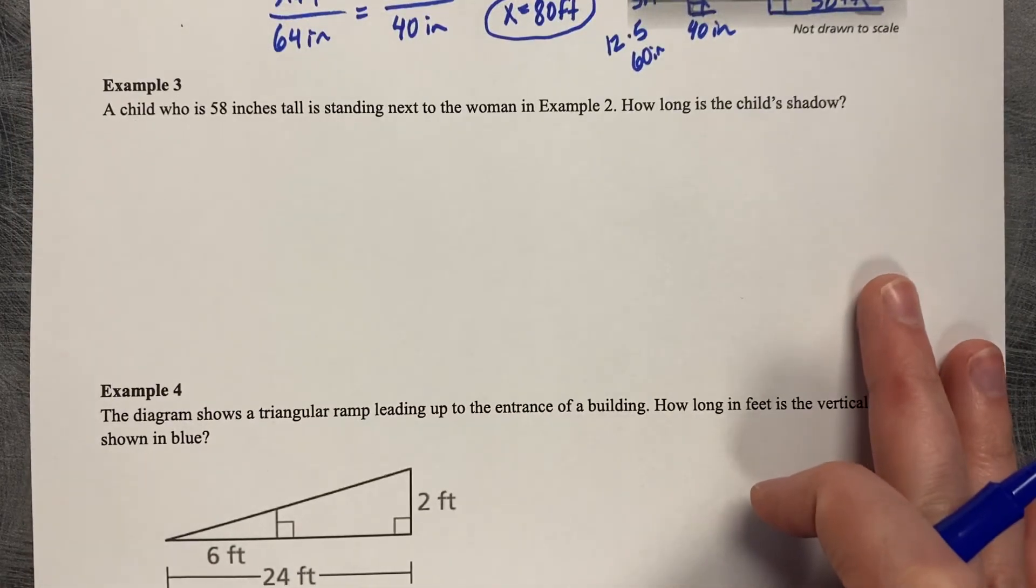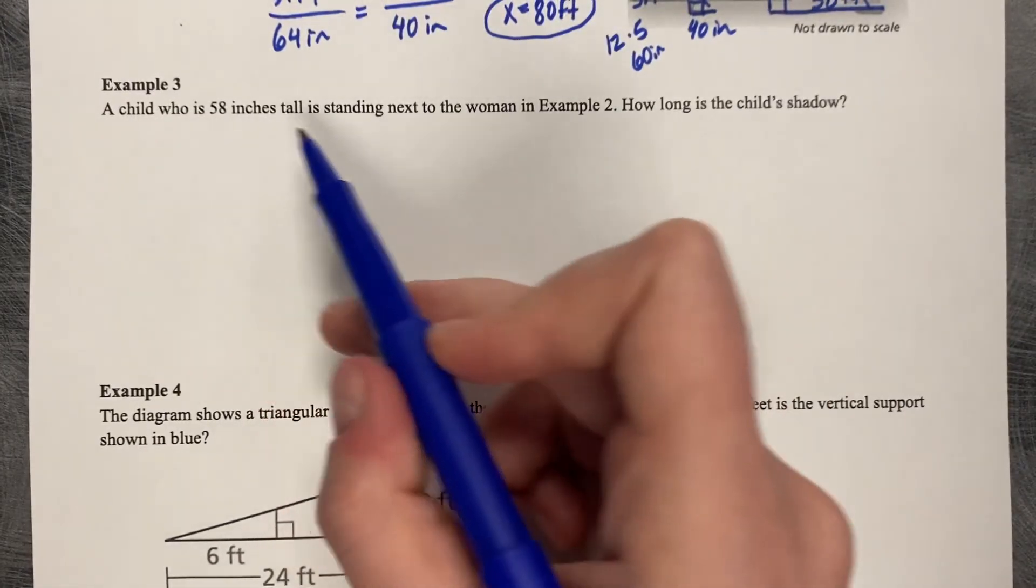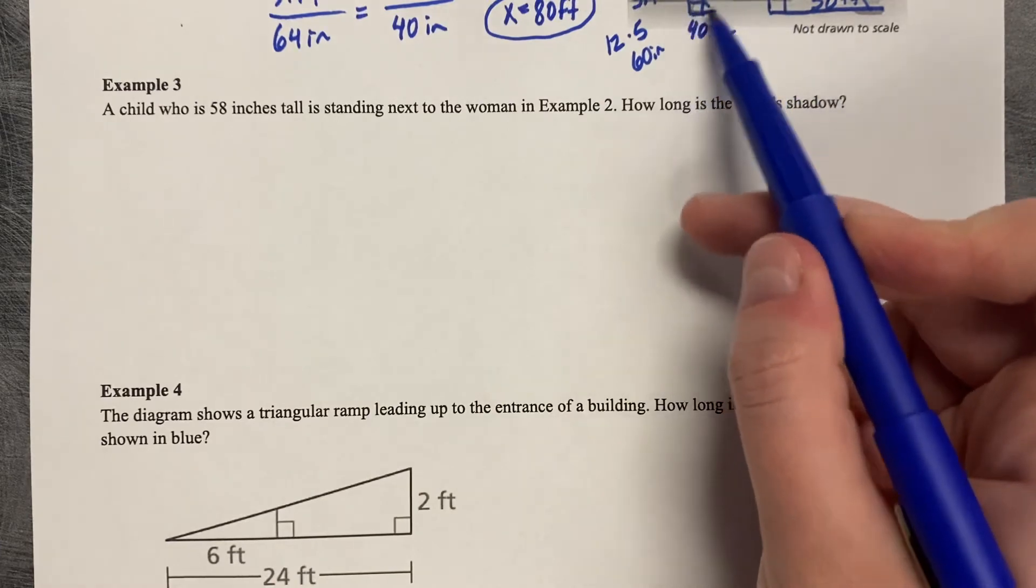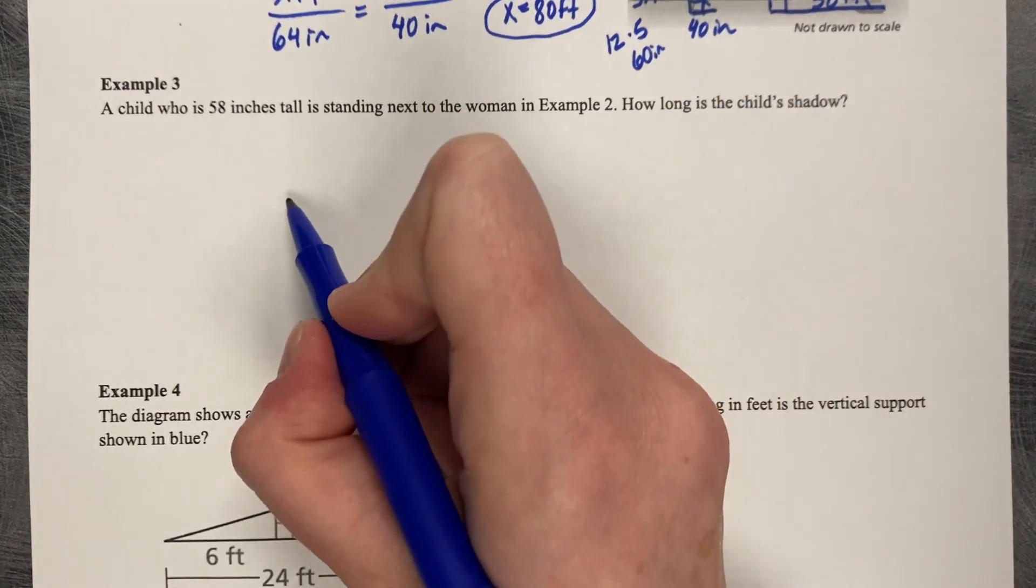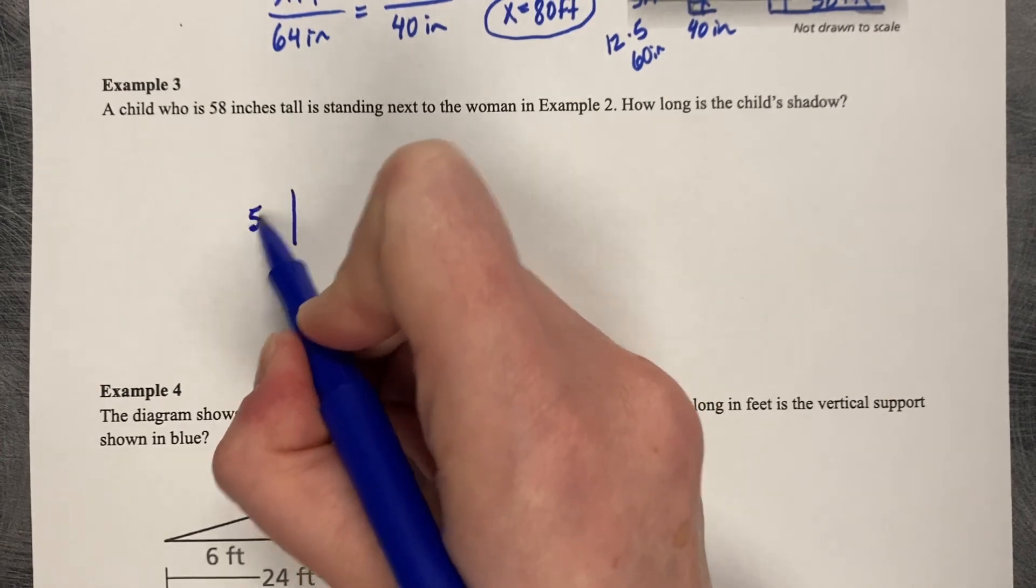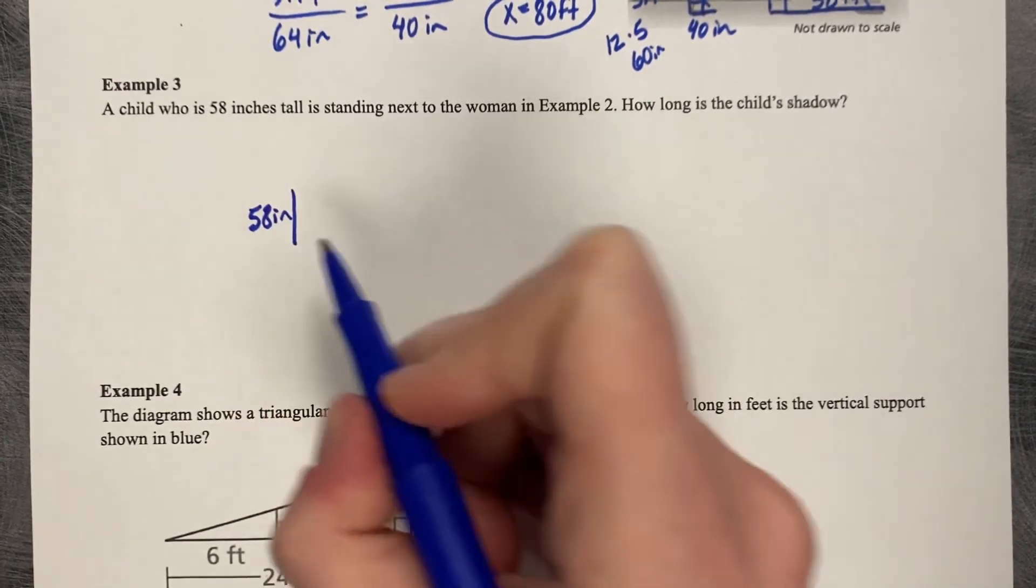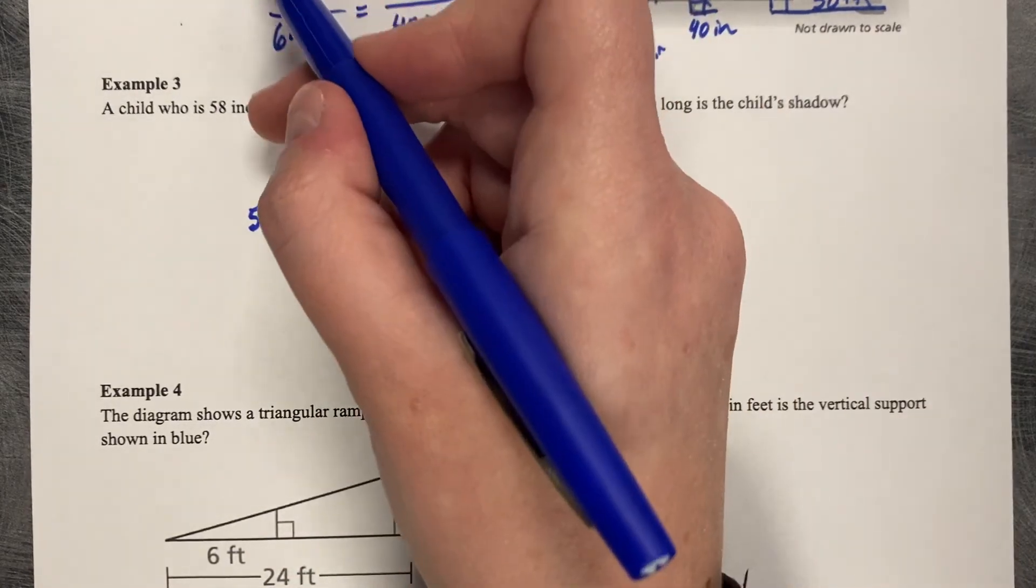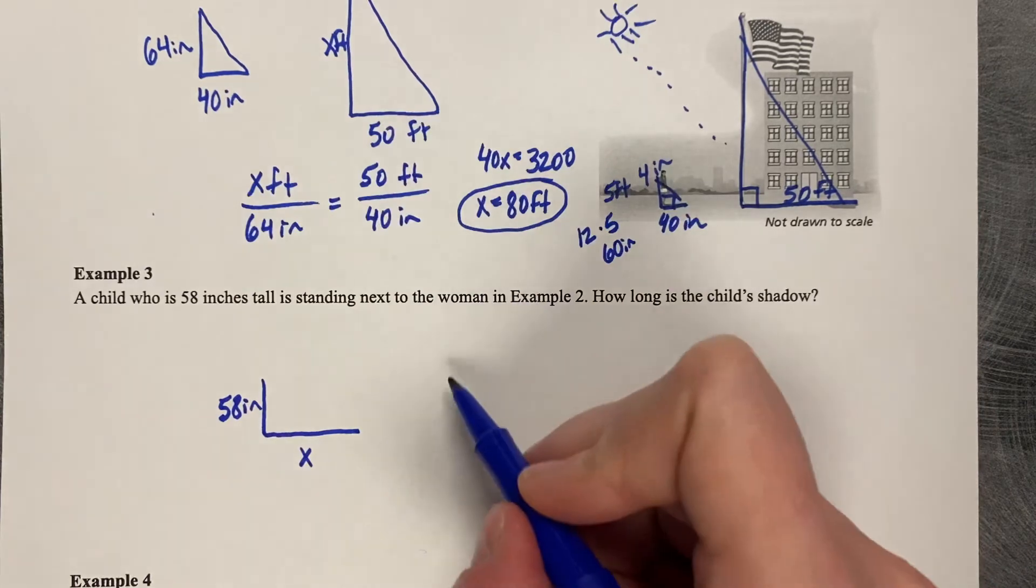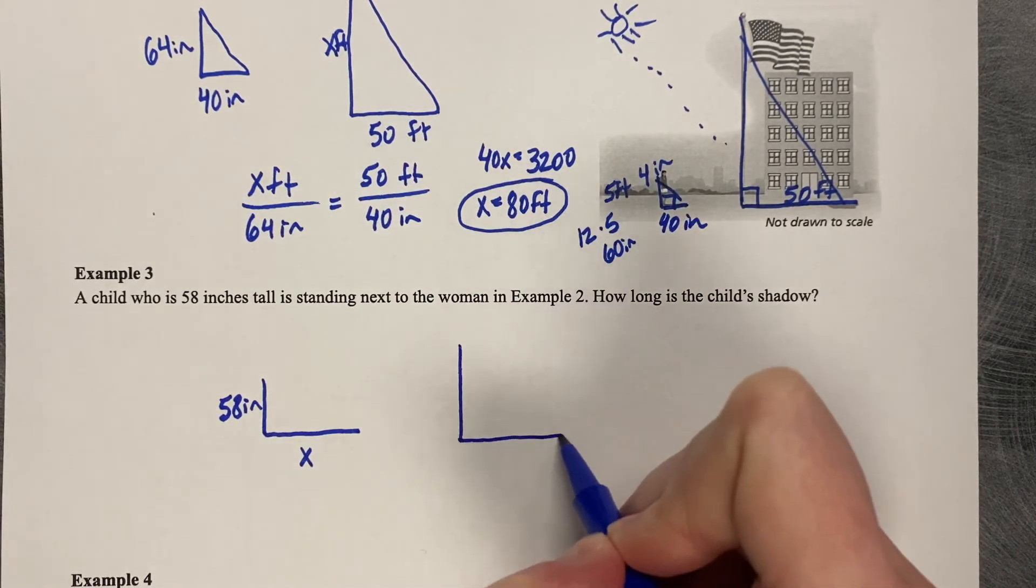All right, it said a child who's 58 inches tall is standing next to the woman in example 2. How long is the child's shadow? So we've got an even smaller kid who's 58 inches and we're missing his shadow. Same woman picture. So this guy right here, the smaller one. So we've got 64 by 40.